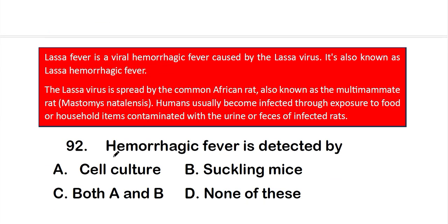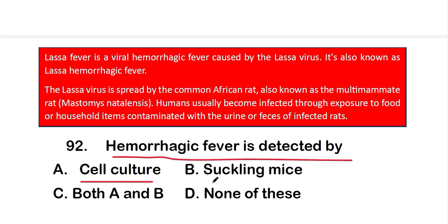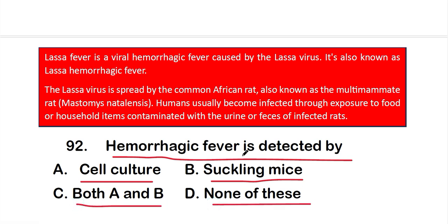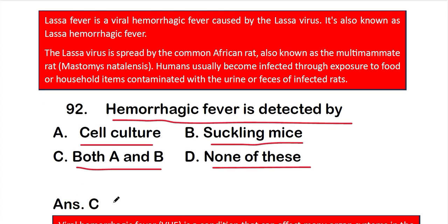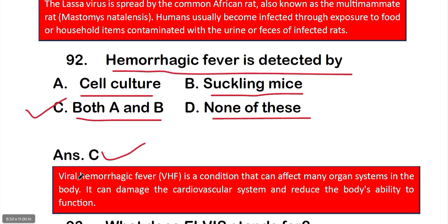Question number 92: hemorrhagic fever is detected by option A, cell culture; option B, suckling mice; option C, both A and B; or option D, none. The right answer is option C — both cell culture and suckling mice. Viral hemorrhagic fever is a condition that can affect many organ systems and can damage the cardiovascular system, reducing the body's ability to function.